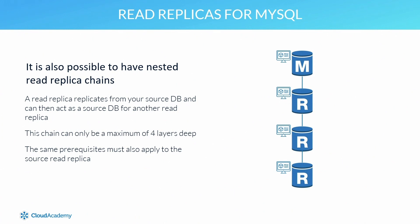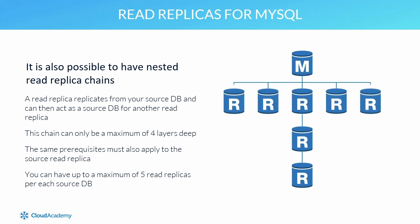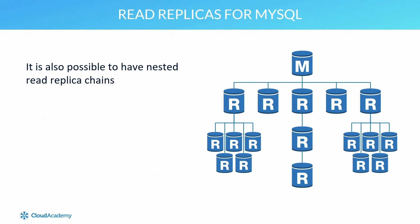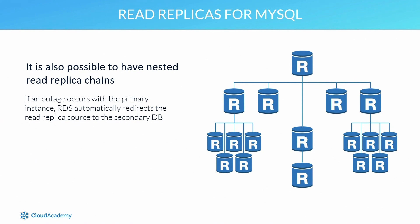If you do nest your read replicas, the same prerequisites must apply to the source read replica — for example, it must be running MySQL 5.6 and have a value of one or greater for automatic backup retention. You can only have up to a maximum of five read replicas per source database, though a source database could be another read replica using the nested feature. If a read replica is created from a source database configured with multi-AZ and an outage occurs, RDS automatically redirects the read replica source to the secondary database to allow asynchronous replication to continue.